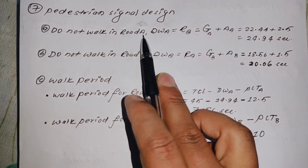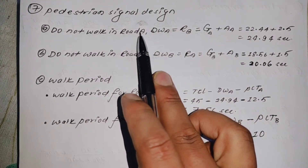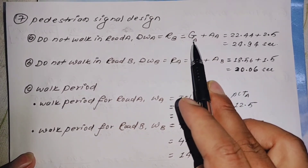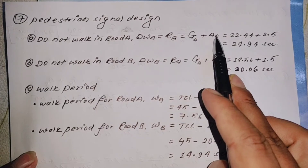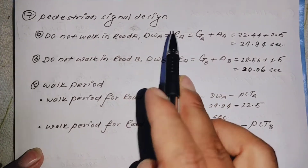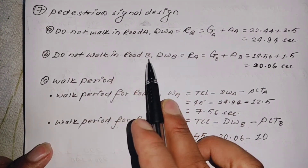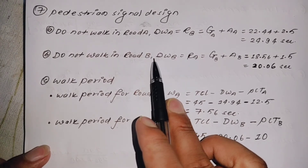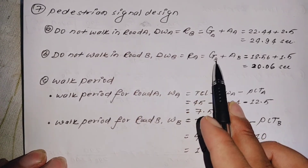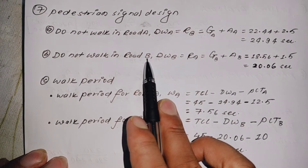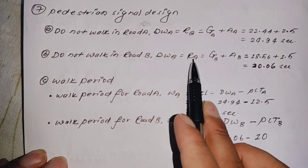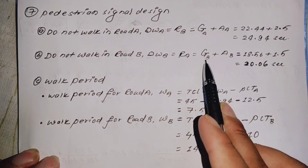Do Not Walk for Road A = green time G_A + amber time A_A = 22.44 + 2.5 = 24.94 seconds. For Road B, the 'Do Not Walk' period covers any time a vehicle can be moving — green plus amber. Do Not Walk for Road B = G_B + A_B = 18.56 + 1.5 = 20.06 seconds.